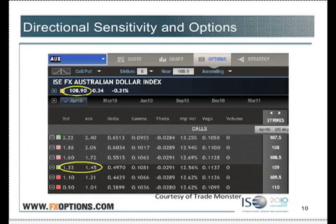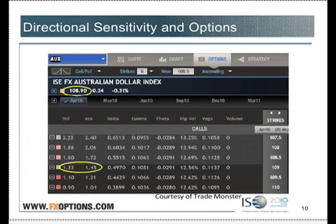So let's say you're looking at the AUX — the Australian dollar, U.S. dollars per Australian dollar. If the AUX is trading at 108.90, we can look at an option chain. I selected this option chain here. Any option-friendly broker will be able to provide you with this. We're just looking at the calls here. Options trade much like stocks where there's a bid and an ask, and here we have a $1.33 bid at a $1.45 offer.